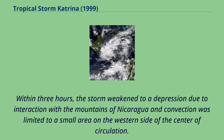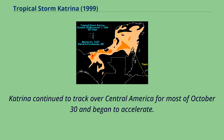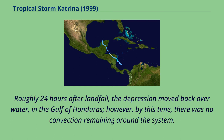Within three hours, the storm weakened to a depression due to interaction with the mountains of Nicaragua, and convection was limited to a small area on the western side of the center of circulation. Katrina continued to track over Central America for most of October 30 and began to accelerate. Roughly 24 hours after landfall, the depression moved back over water in the Gulf of Honduras. However, by this time, there was no convection remaining around the system.